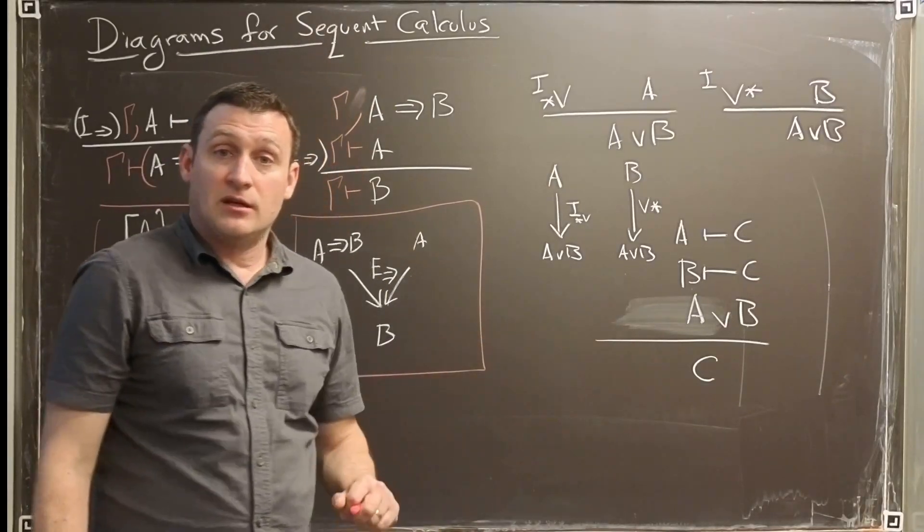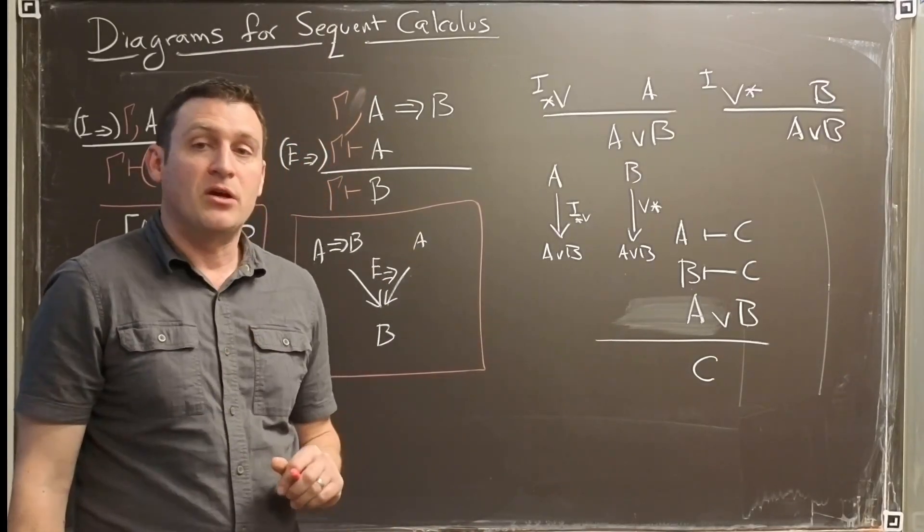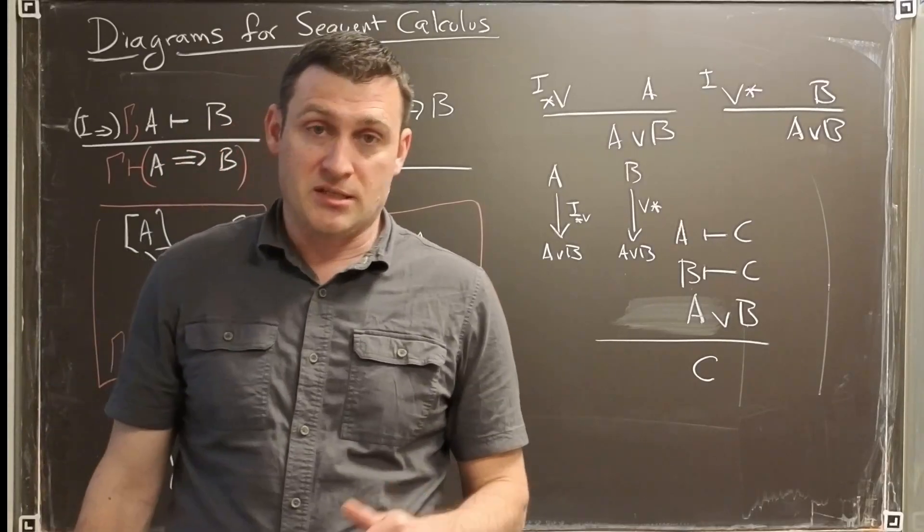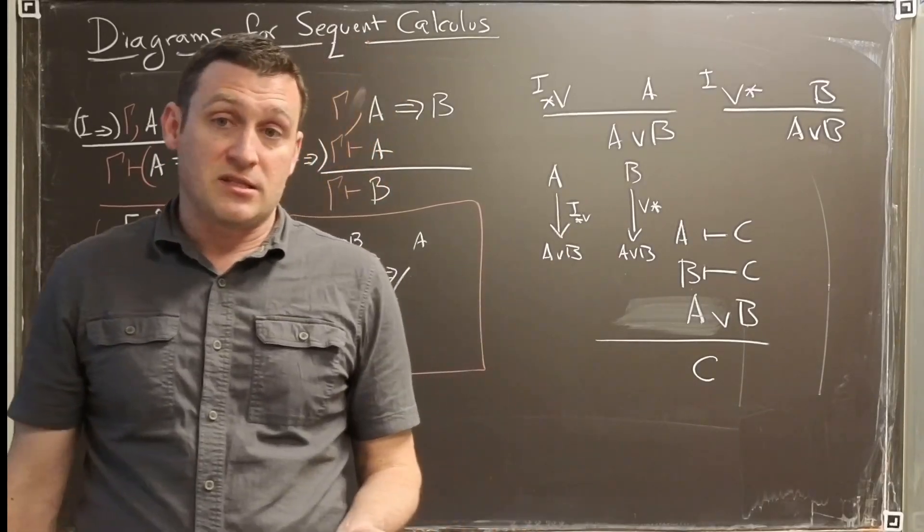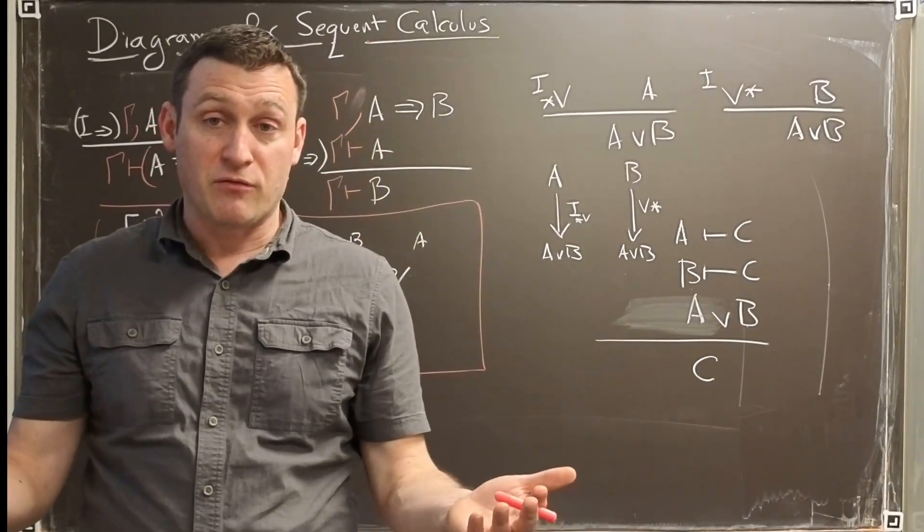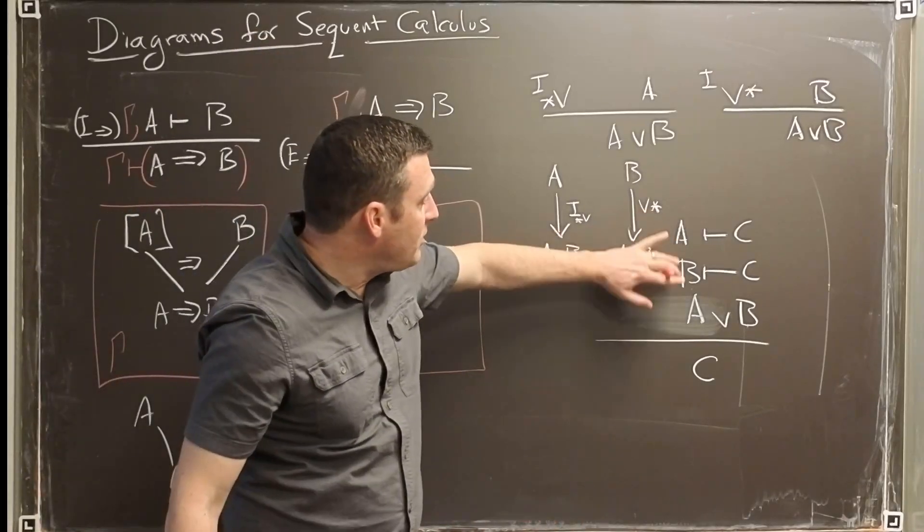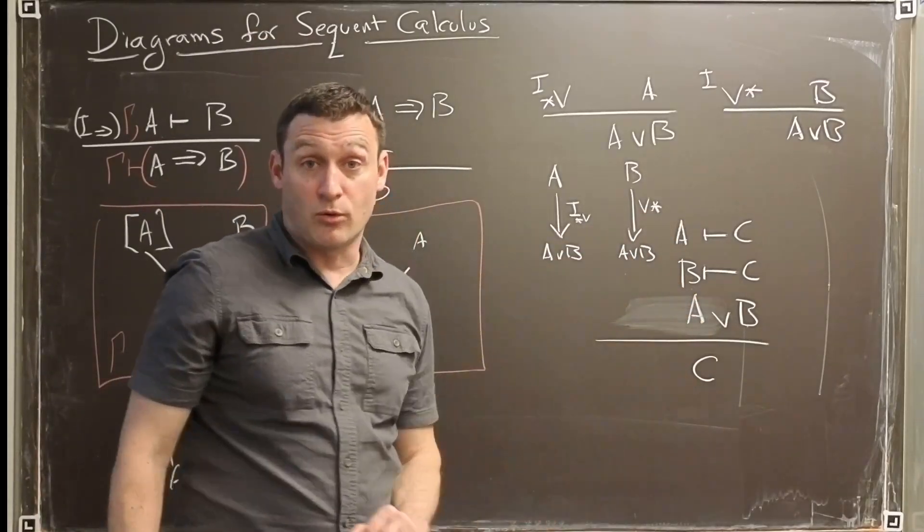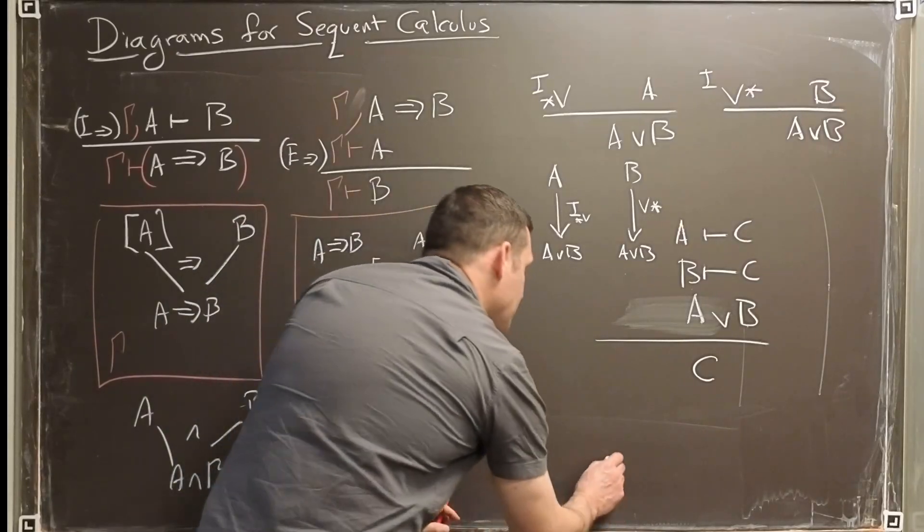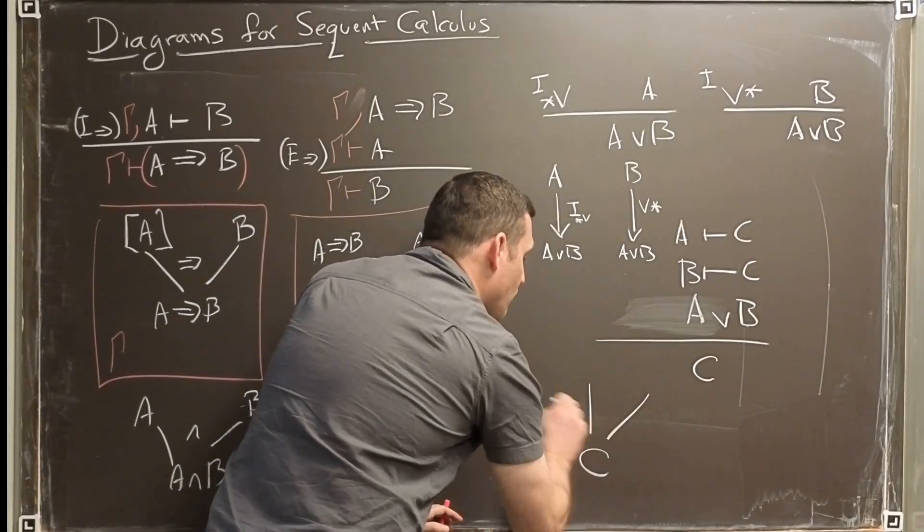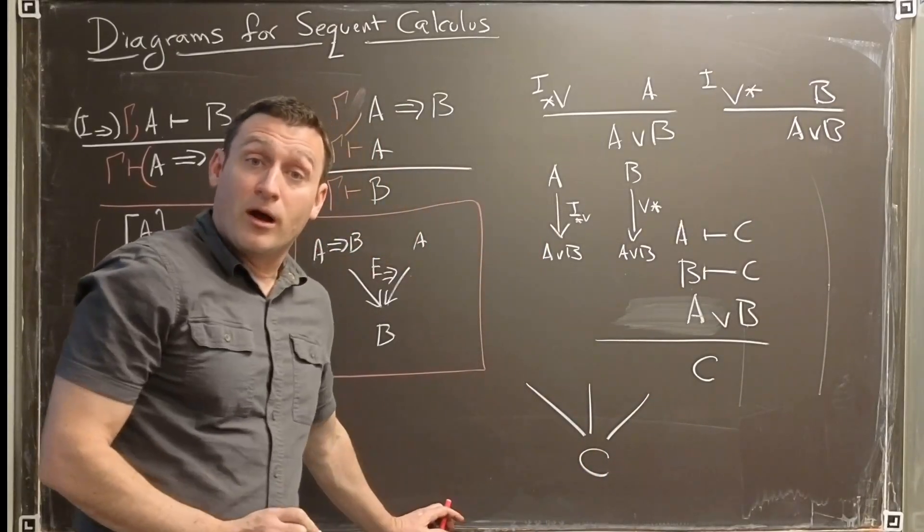What about a diagram for this? It's a little bit more tricky, because there's actually three premises now. All of these are taking place in the same context, the same background sheet of paper, but we see one, two, and three inputs to derive C. So we'll have C at the bottom, and then we'll have three pieces of information that all come together.